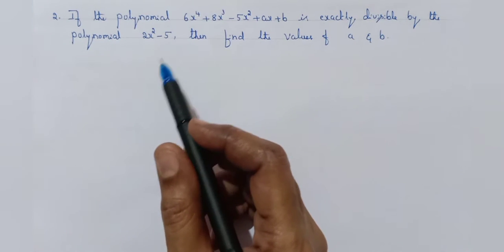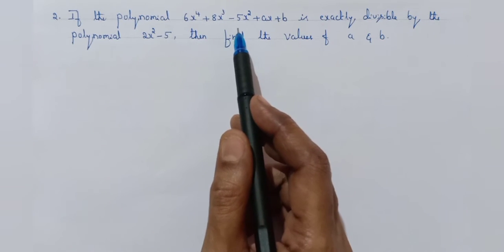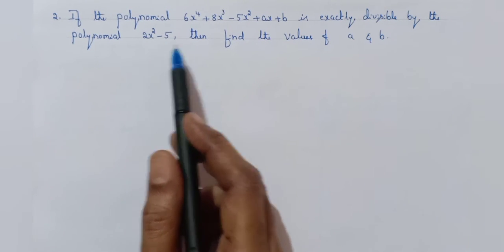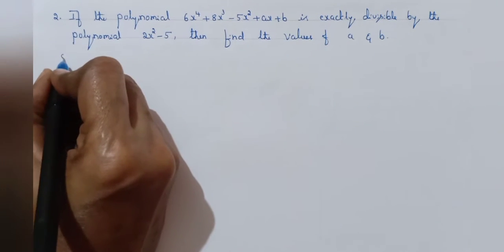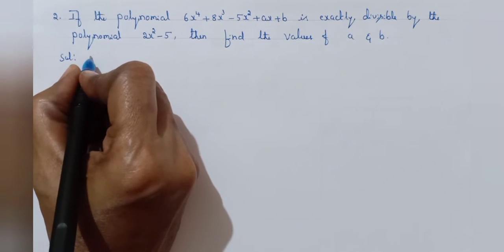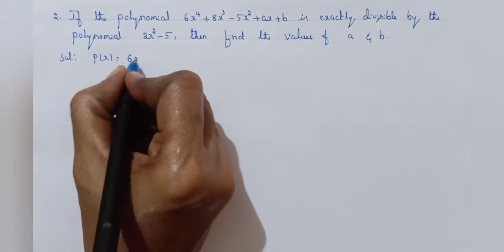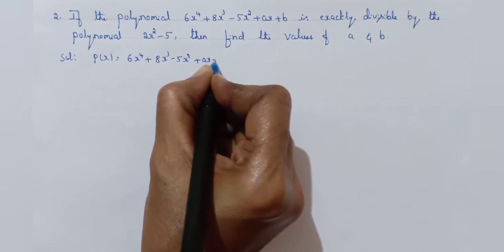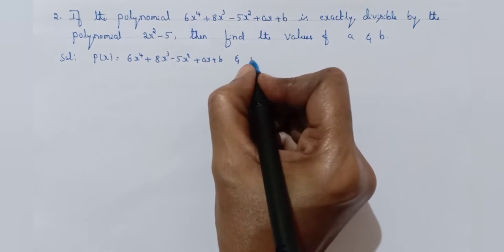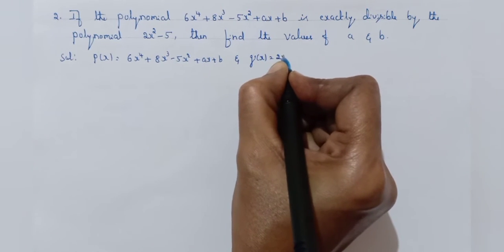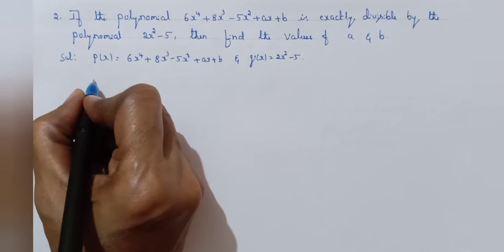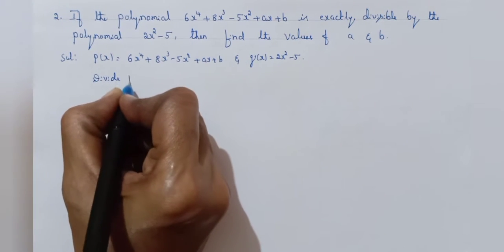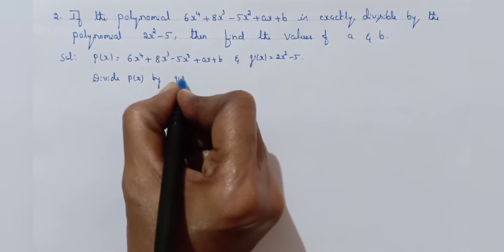Next question: If the polynomial 6x to the power of 4 plus 8x cube minus 5x square plus ax plus b is exactly divisible by the polynomial 2x square minus 5, then find the values of a and b. Consider the dividend as p of x and the divisor as g of x equal to 2x square minus 5. Now divide p of x by g of x.